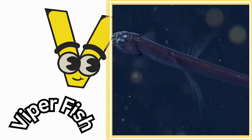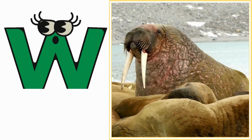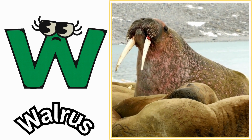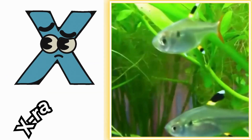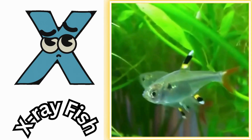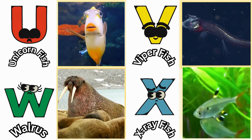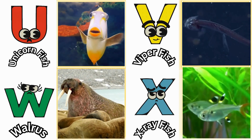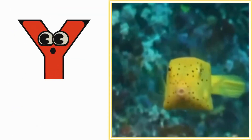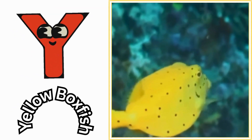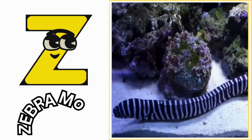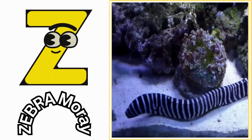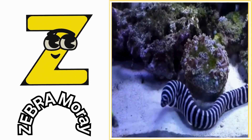V is for viperfish. Vuh, vuh, viperfish. W is for walrus. Wuh, wuh, walrus. X is for x-ray fish. Z, z, x-ray fish. Y is for yellow boxfish. Ya, ya, yellow boxfish. Z is for zebra moray. Z, z, zebra moray.